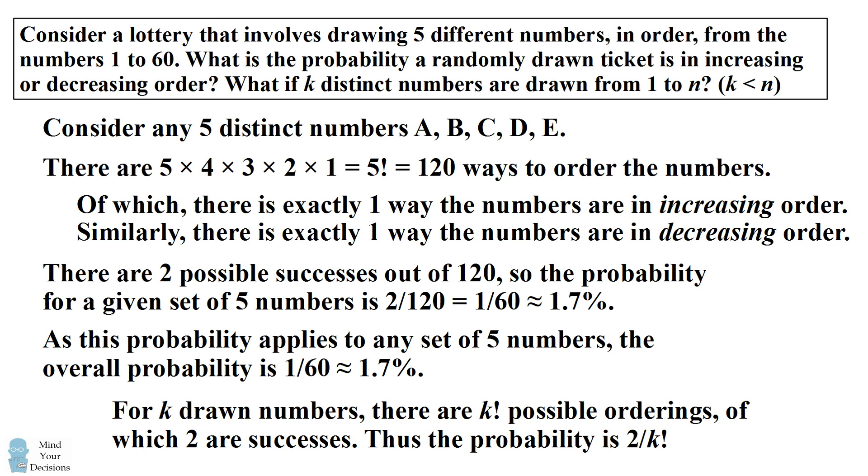Thus, the probability is 2 divided by k factorial. We know that applies to a specific set of k numbers, and it will apply to any set of k drawn numbers. So the probability in the general case is 2 divided by k factorial.